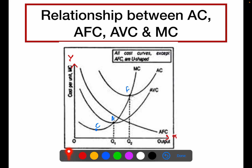The next point is that the AC curve and AVC curve can come closer to each other. If you observe the gap between these two curves, in the beginning the gap was large, then it becomes smaller and smaller. So the gap between these two curves is decreasing. But they will never intersect each other. AC and AVC come closer but never intersect — because of the AFC curve.